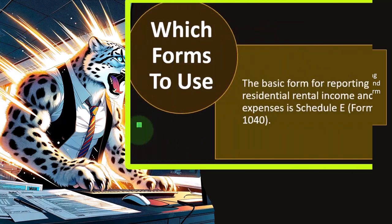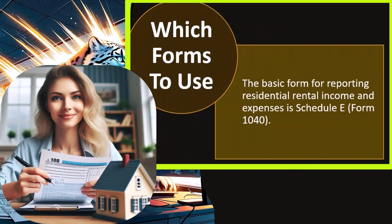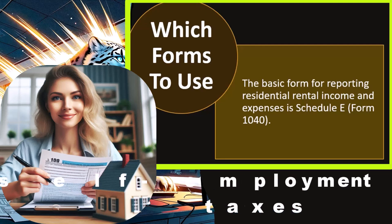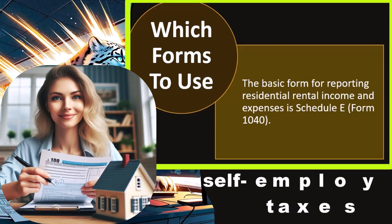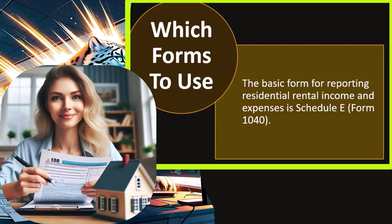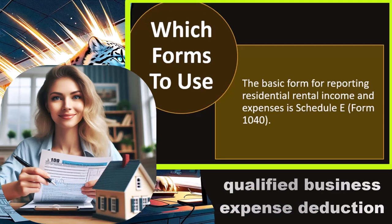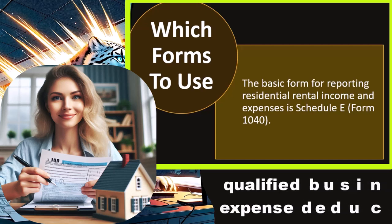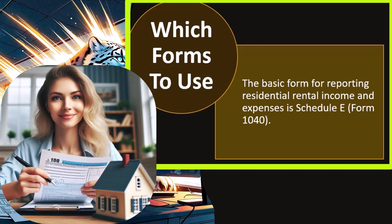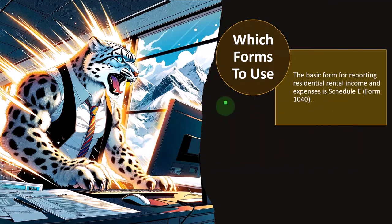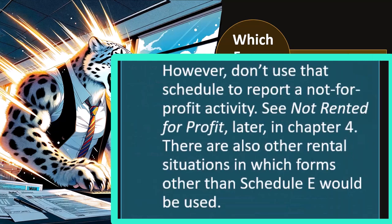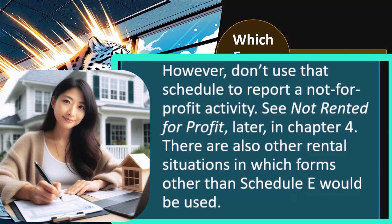Which forms to use? The basic form for reporting residential rental income and expenses is Schedule E, Form 1040 — rather than Schedule C. Key differences: on Schedule E you typically don't have self-employment taxes, which you do have on Schedule C, largely because rental activity has a passive component. You also don't have the qualified business income deduction available on Schedule C. However, Schedule E may be subject to loss limitations like the passive activity rules. Don't use Schedule E to report a not-for-profit activity.